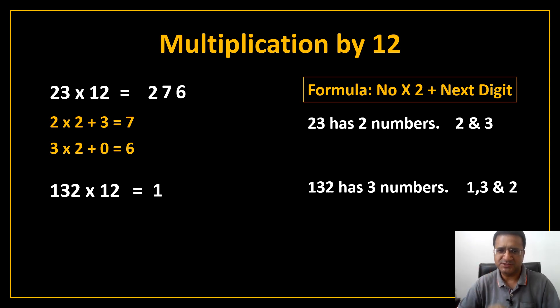Here we have three numbers: 1, 3 and 2. Apply the formula one by one. So, first number is 1. So, 1 multiply by 2 plus next digit. After 1, the next digit is 3. So, 1 into 2 plus 3 it will give you 5 and just add 5 here.